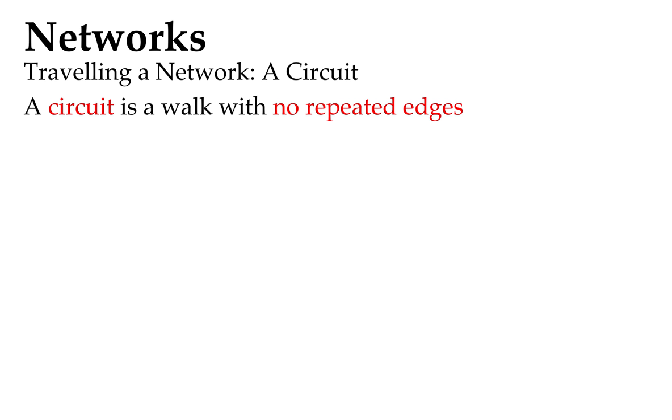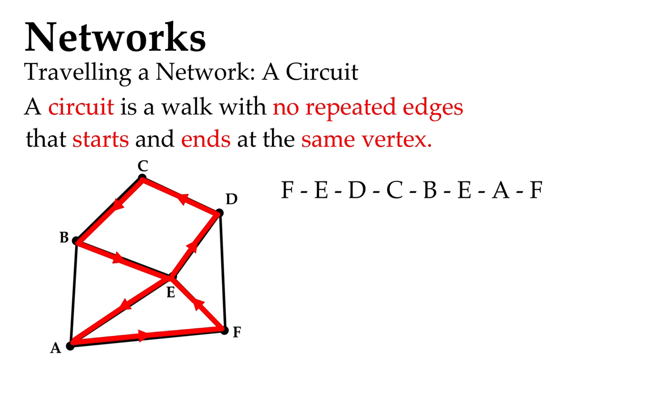We've also got a circuit. It's a type of walk with no repeated edges but also has the condition that it starts and ends at the same vertex. So here's an example: it's a walk, it's got no repeated edges, we didn't use any edges twice, it starts and ends at the same vertex. It did repeat a vertex though.